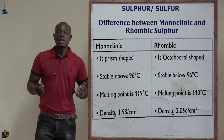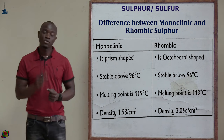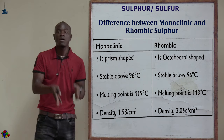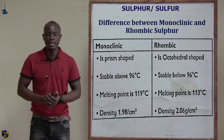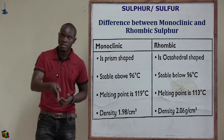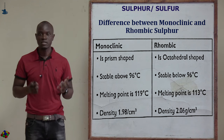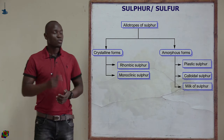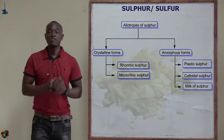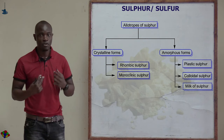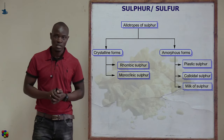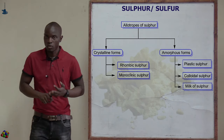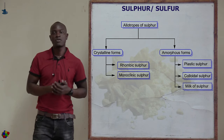Remember the transition temperature: this is the temperature at which monoclinic sulfur changes to rhombic sulfur, or rhombic sulfur changes back to monoclinic sulfur. Sulfur has two main forms — crystalline forms (rhombic and monoclinic) and amorphous forms. Now let's look at the amorphous forms of sulfur.